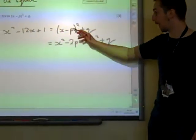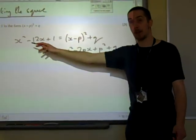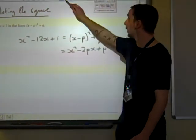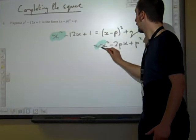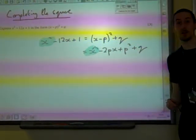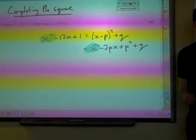It's really important to be careful with that bracket. Now we're comparing the two sides of this equation. If we look at this, we've got one x² on both sides. So that's great, that's all sorted.